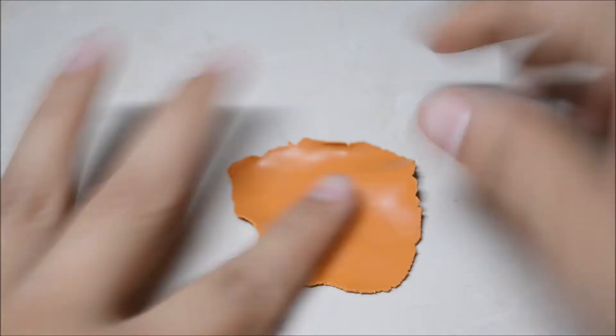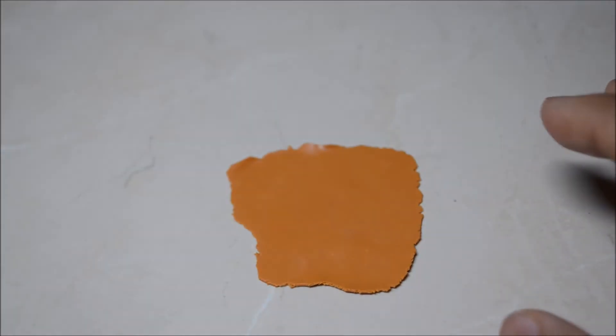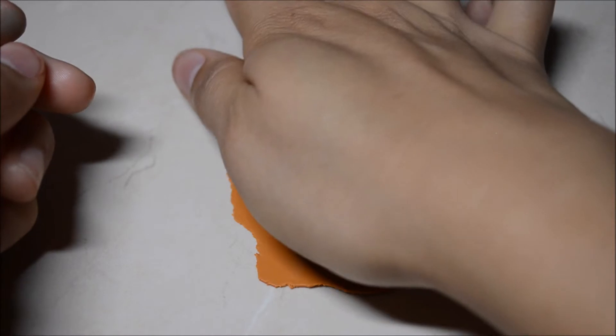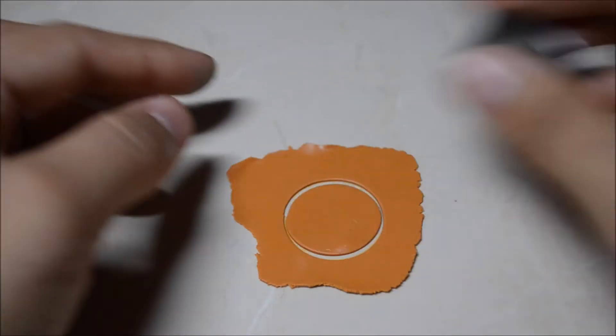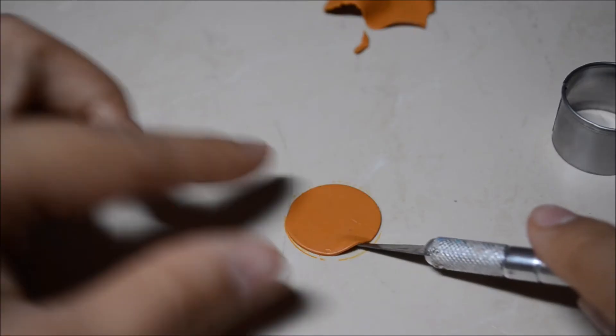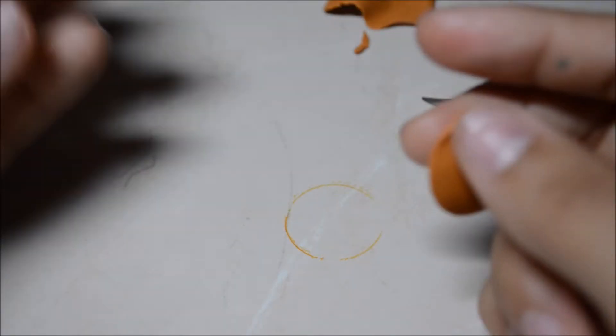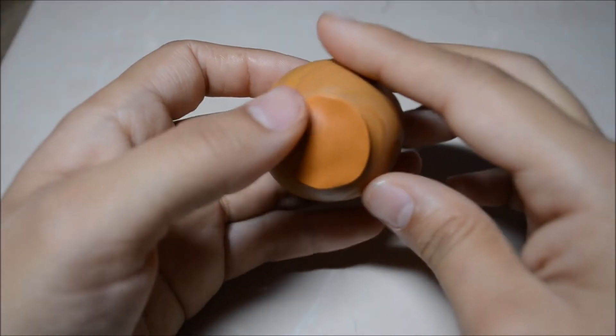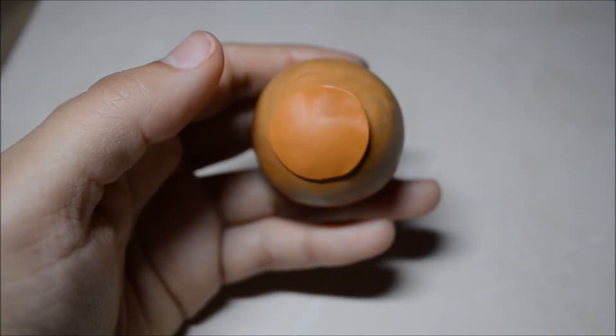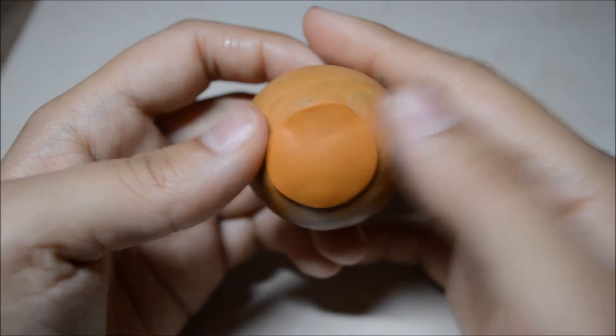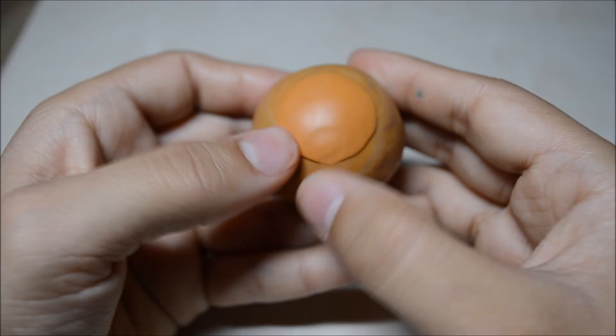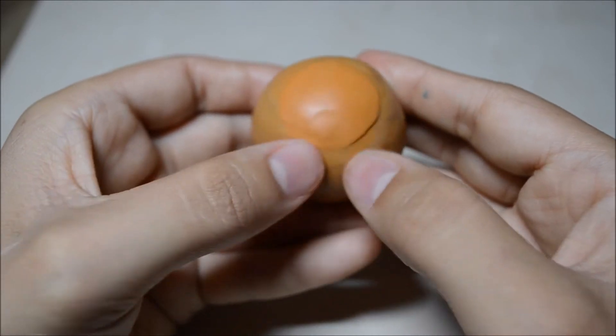Now you take the little bit of orange that we put aside and flatten it really thin. Take the circle cutter and cut out a circle, and you just put it on top of the ball and smooth it out with your finger.